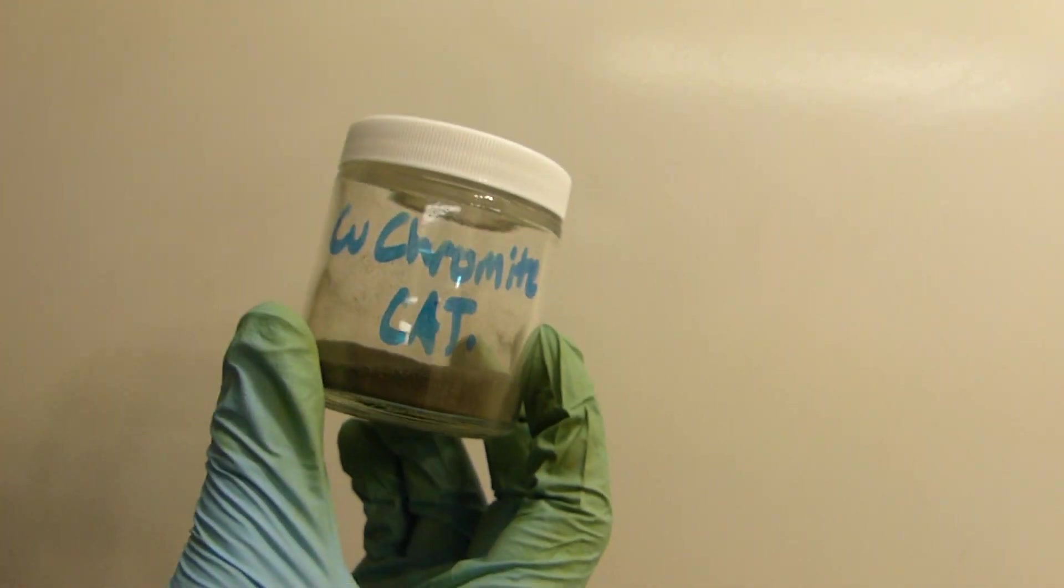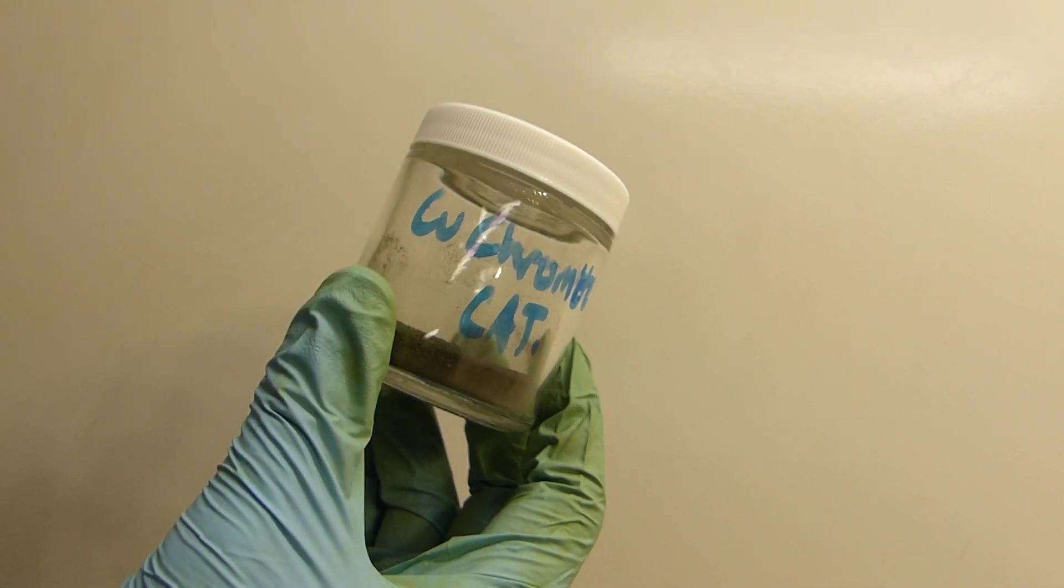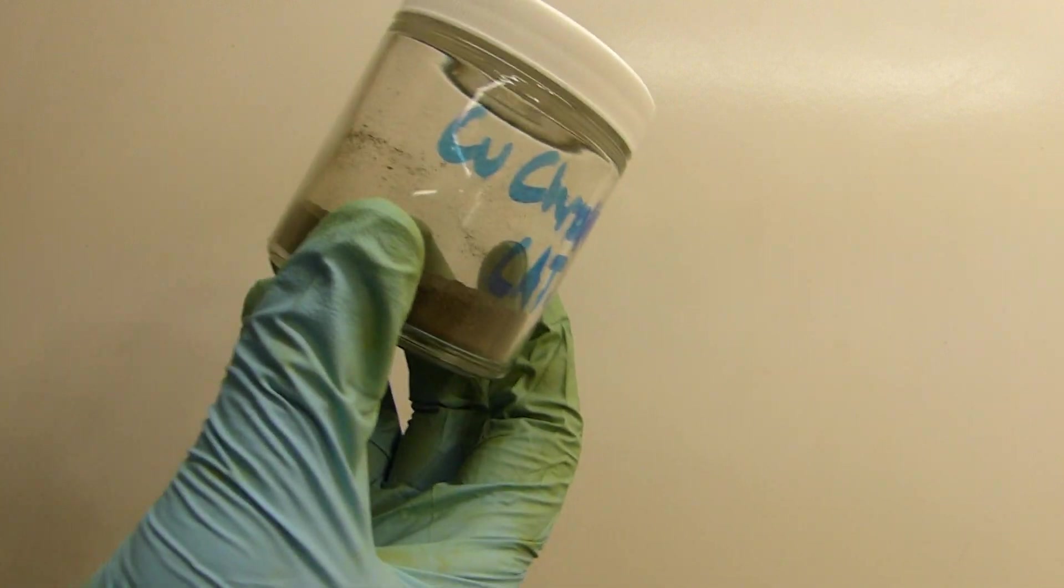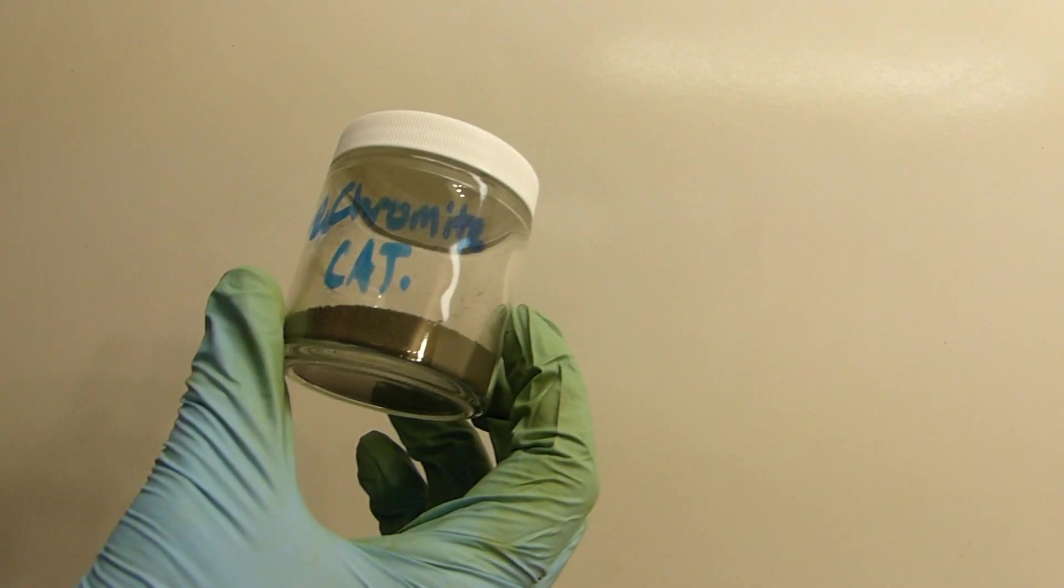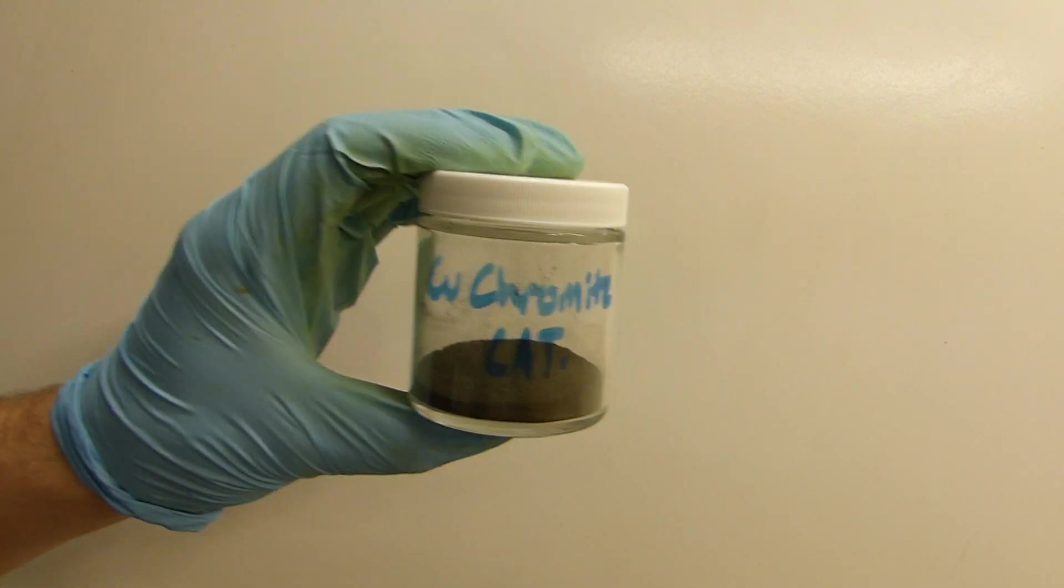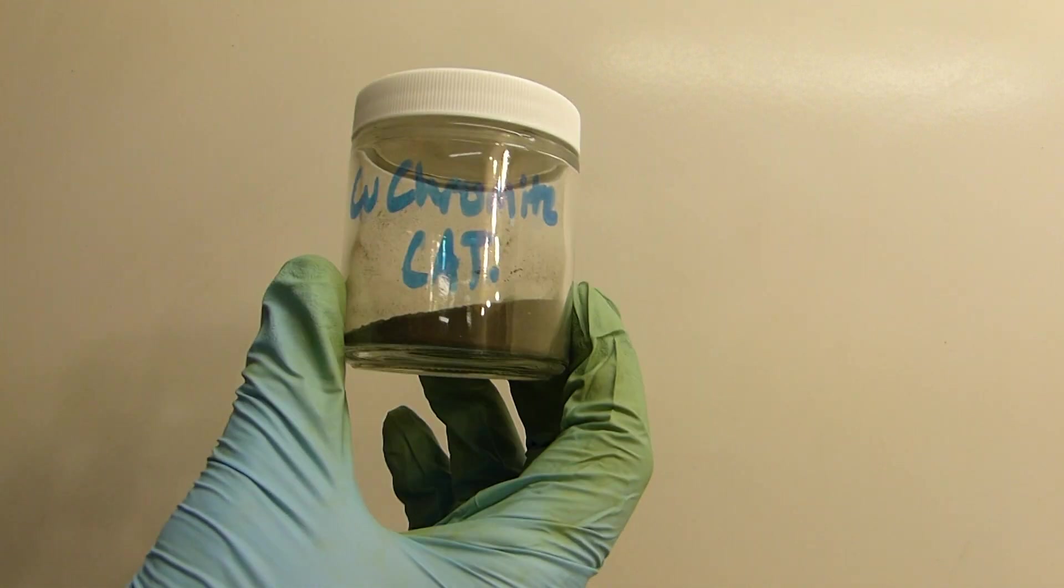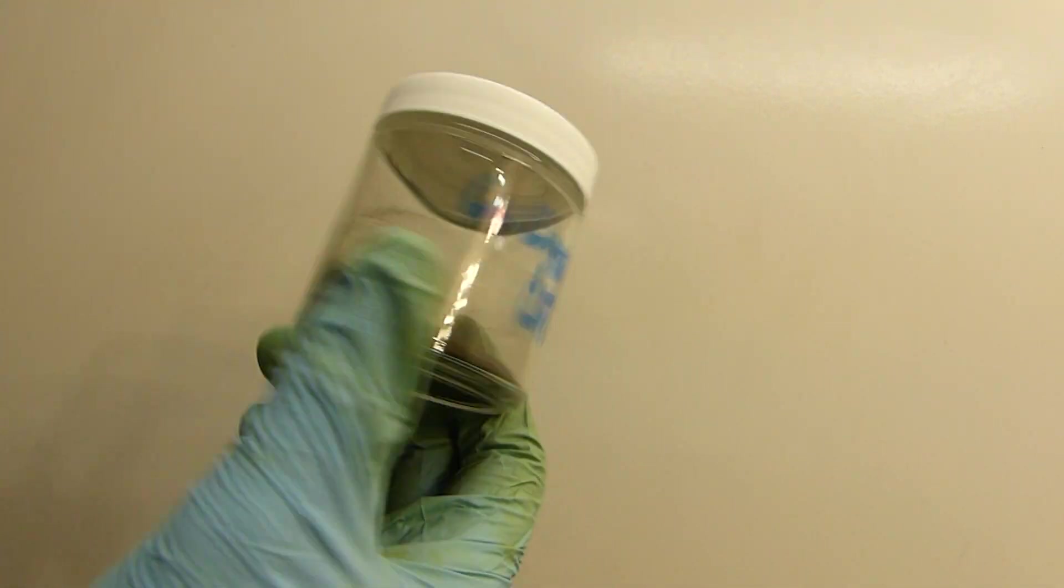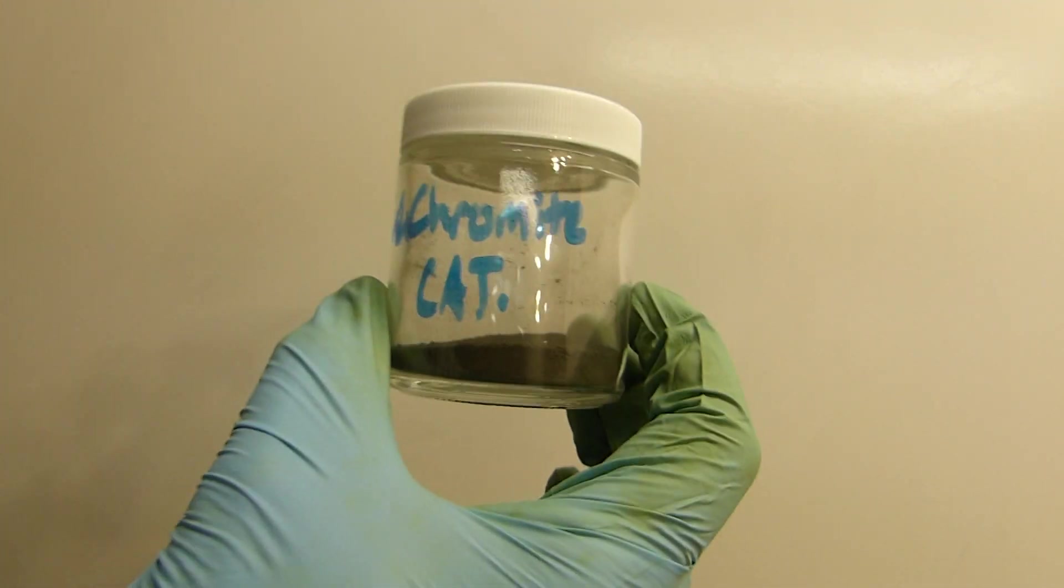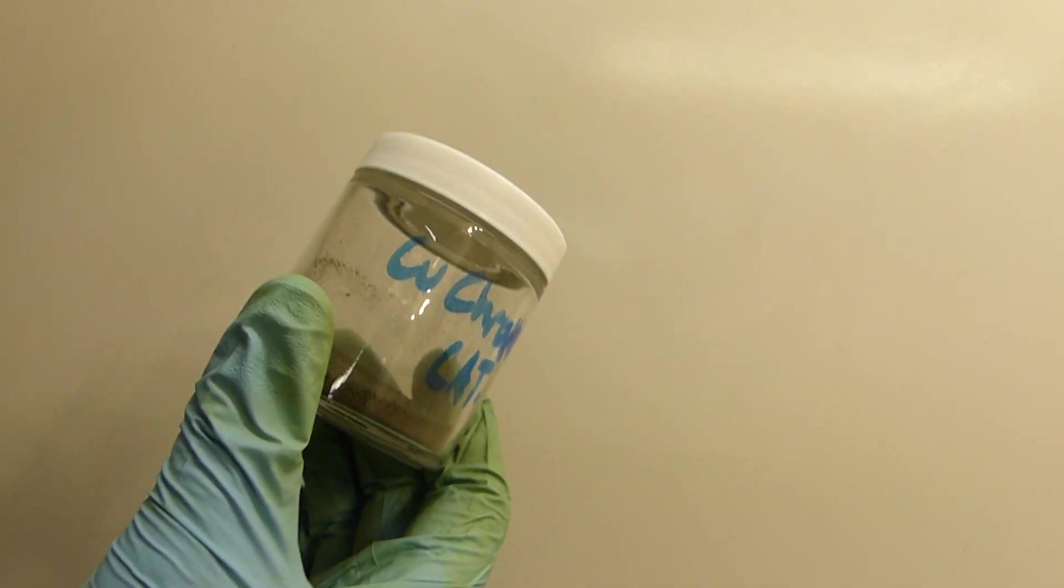This copper chromite catalyst can actually be used for hydrogenations as well. But unfortunately, that particular version of the copper chromite catalyst also includes a barium chromite mixture with the copper chromite, which prevents sulfate catalyst poisoning because the barium precipitates sulfates as very insoluble barium sulfate. So not really useful for hydrogenation in this particular version, but you can make a version that is useful for that.